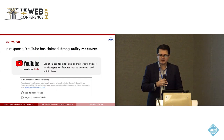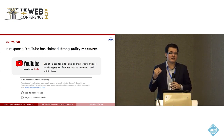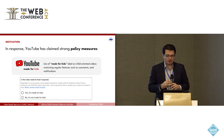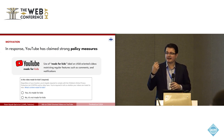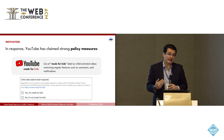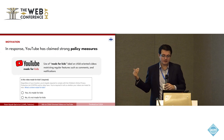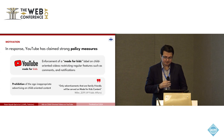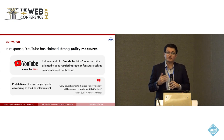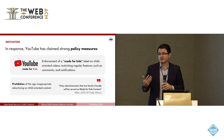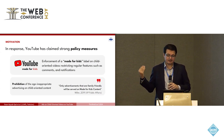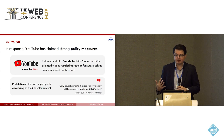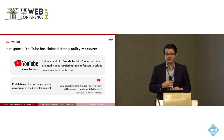As a consequence, YouTube has launched interventions including the use of the made-for-kids label, which YouTube requires content creators to include, and which restricts regular features such as comments and notifications. At the bottom of the slide you see what content creators see: 'Is this video made for kids?' At the same time, there is also prohibition of age-inappropriate advertising on child-oriented content, and only advertisements that are family friendly will be served on made-for-kids content.